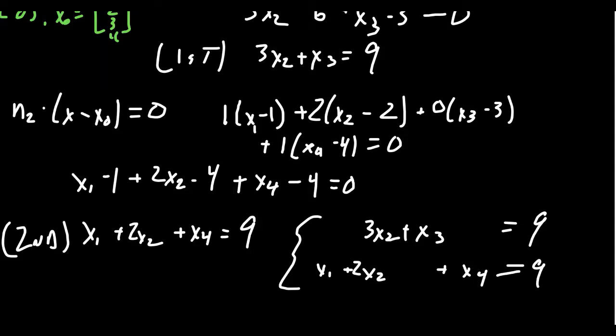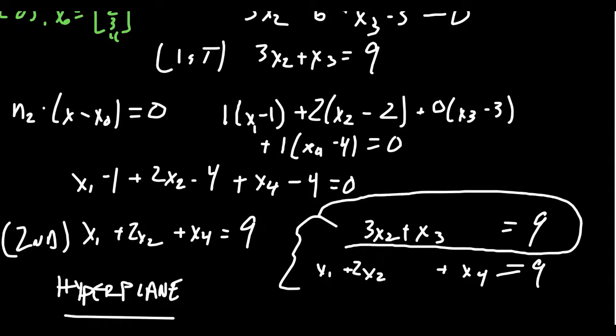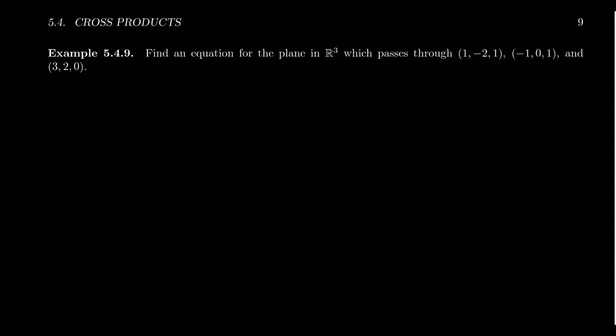What does this have to do with the cross product? In this problem we took the spanning vectors of the flat and found the normal vectors, then described the system using those normal vectors. In the case of a hyperplane — where the dimension difference between the ambient space and the flat is only 1 — you only have to find one linear equation. In particular, in R3 we can use the cross product or the determinant approach to do this exact same process.